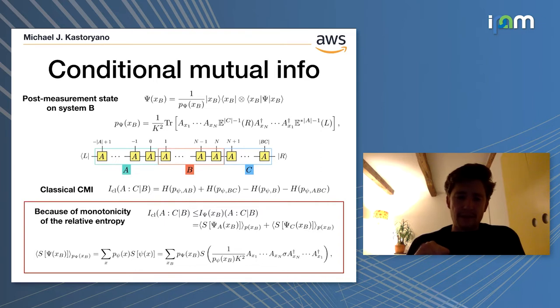Now here's the first bit of magic. I'll tell you why we care about the conditional mutual information in a second. If you start with the classical conditional mutual information on A and C conditioned on B, you can upper bound it by the quantum conditional mutual information on the same regions, but where you take the post-measurement state on B. This in turn can be written as the sum of the average entropy of the post-measurement state on B restricted to A plus the same thing on C, which takes this simple form. This is the object of study.